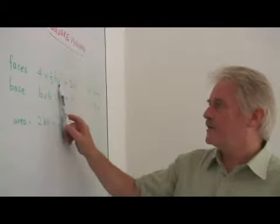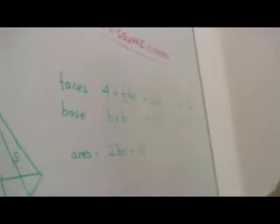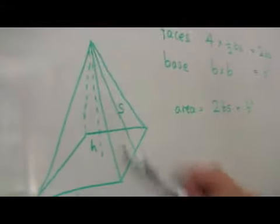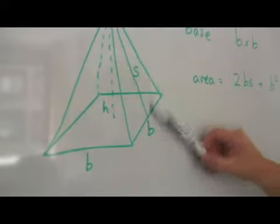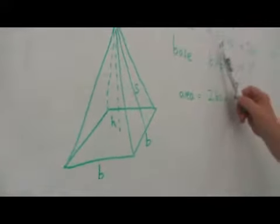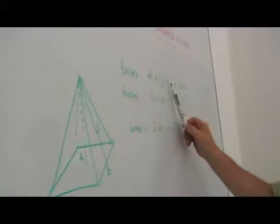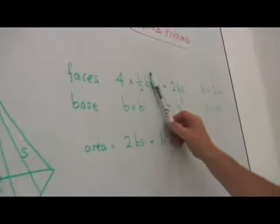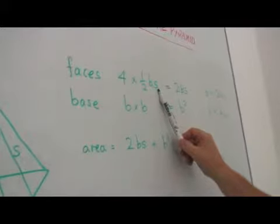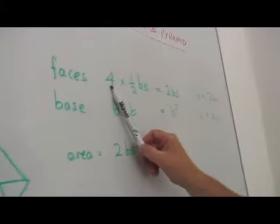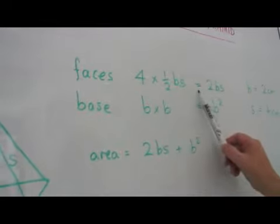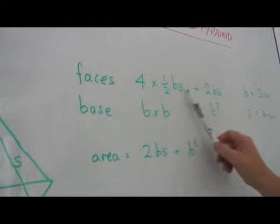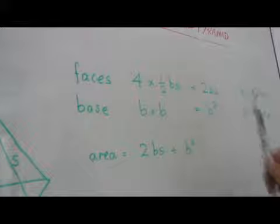The first four faces are all the same. They have a width B, a slant height S, and they are triangular. So, triangular with a base length B and height S, is half BS for the area of a single triangle, half of the base times the slant height. And we multiply that by four to get the area of all of the sloping faces. And this is four times a half BS, which is two B times S.